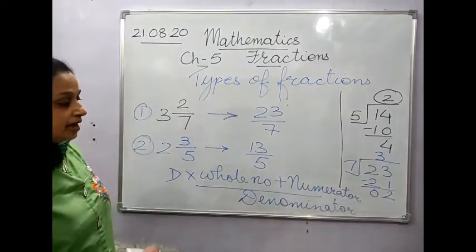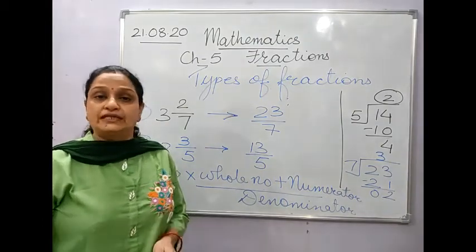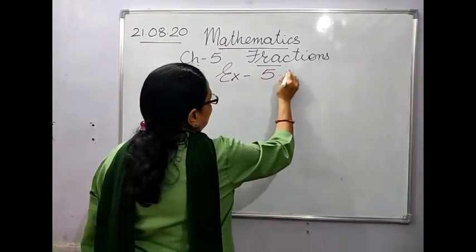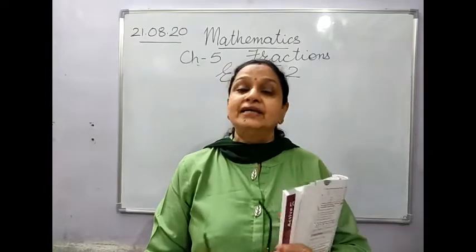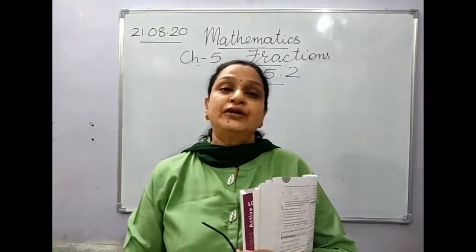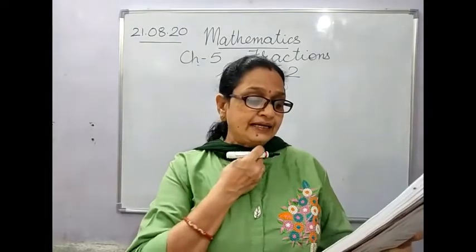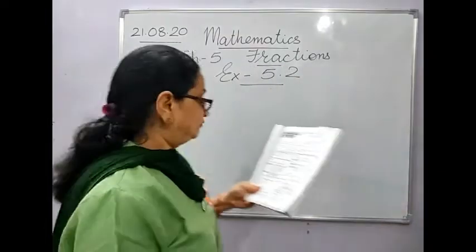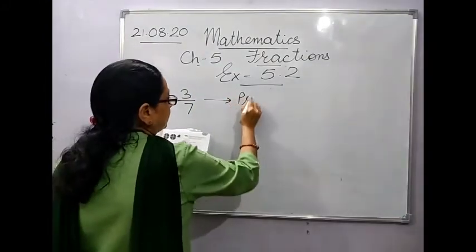I hope this is clear to everyone. Now we move on to Exercise 5.2. As usual, I will do some sums on the board and you should practice the remaining sums in your copies. The first question asks you to identify whether a fraction is proper, improper, or mixed. The first one is 3/7 — the numerator is smaller than the denominator, so it is a proper fraction.